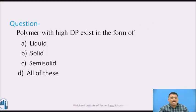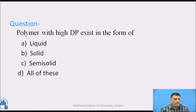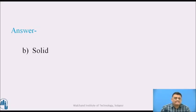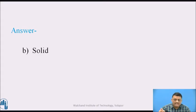Here is a question: polymer with high degree of polymerization exists in the form of — think for a moment. The correct answer is solid. When the degree of polymerization is more, it exists as solid; when it is low, it exists as liquid; and when it is moderate, it exists as semi-solid.